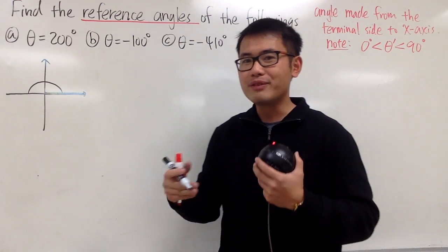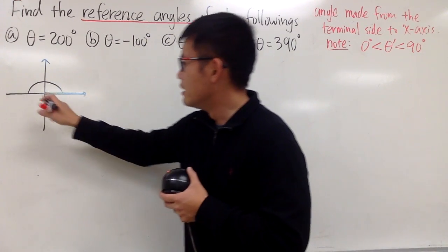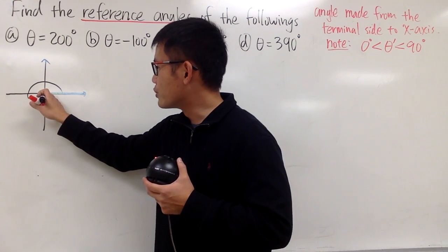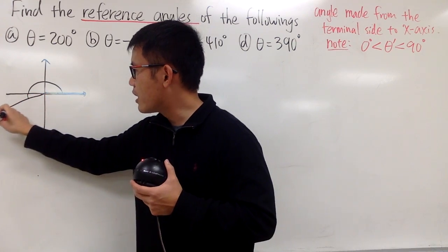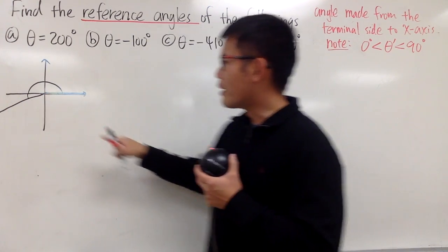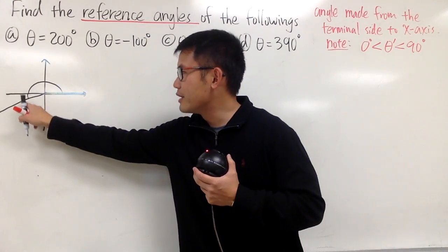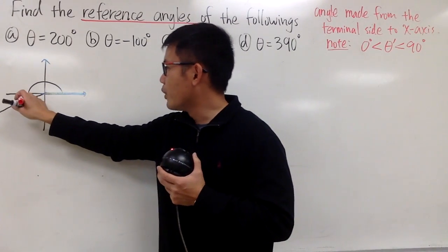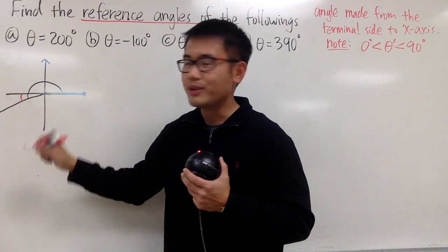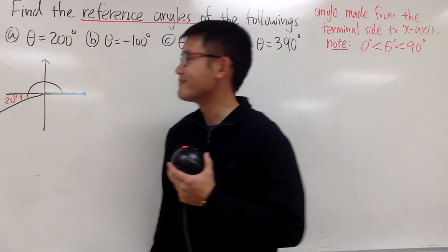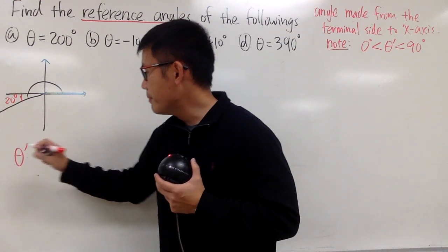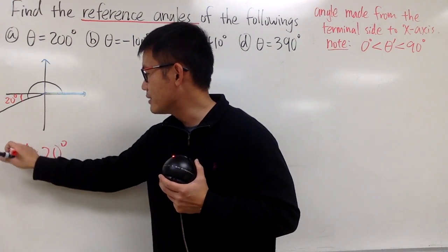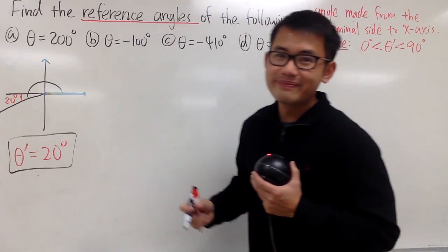To get to 200 degrees, we have to go 20 degrees more, so I'll just go down a little bit — let's say that's 20 degrees. I'll draw the terminal side from here to here. Remember, the reference angle is the angle from the terminal side to the x-axis, and that's exactly the 20 degrees we mentioned. So theta prime, the reference angle, is equal to 20 degrees.